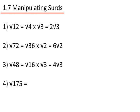Root 175. The largest square number that goes into 175 is 25. That's root 25 times root 7. The square root of 25 is 5, and so that's 5 root 7.